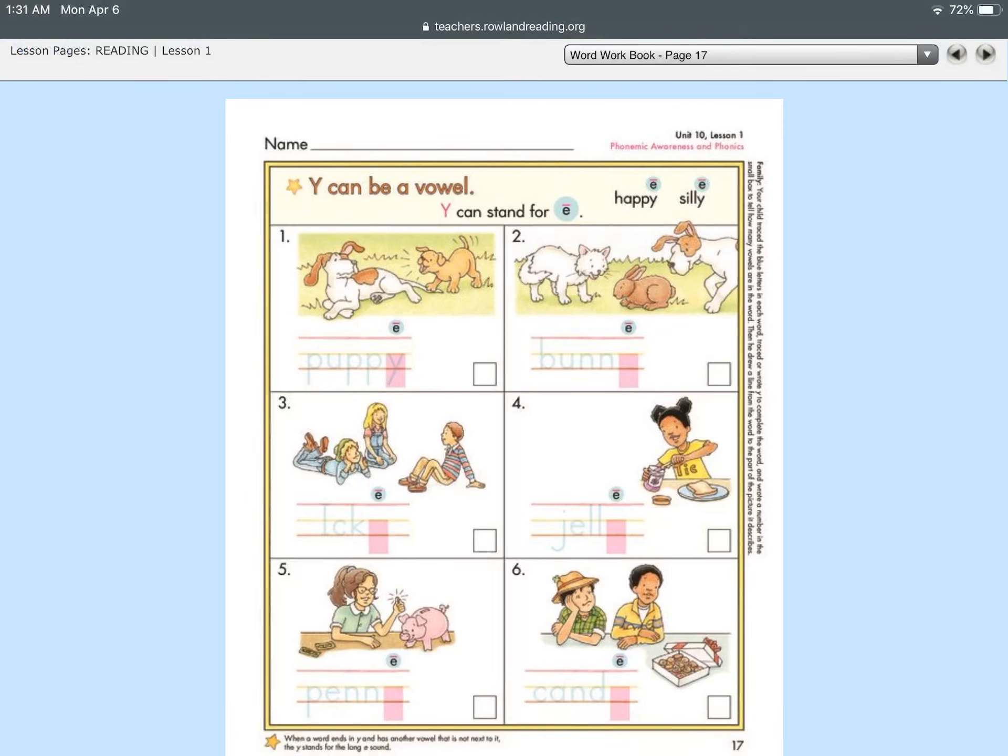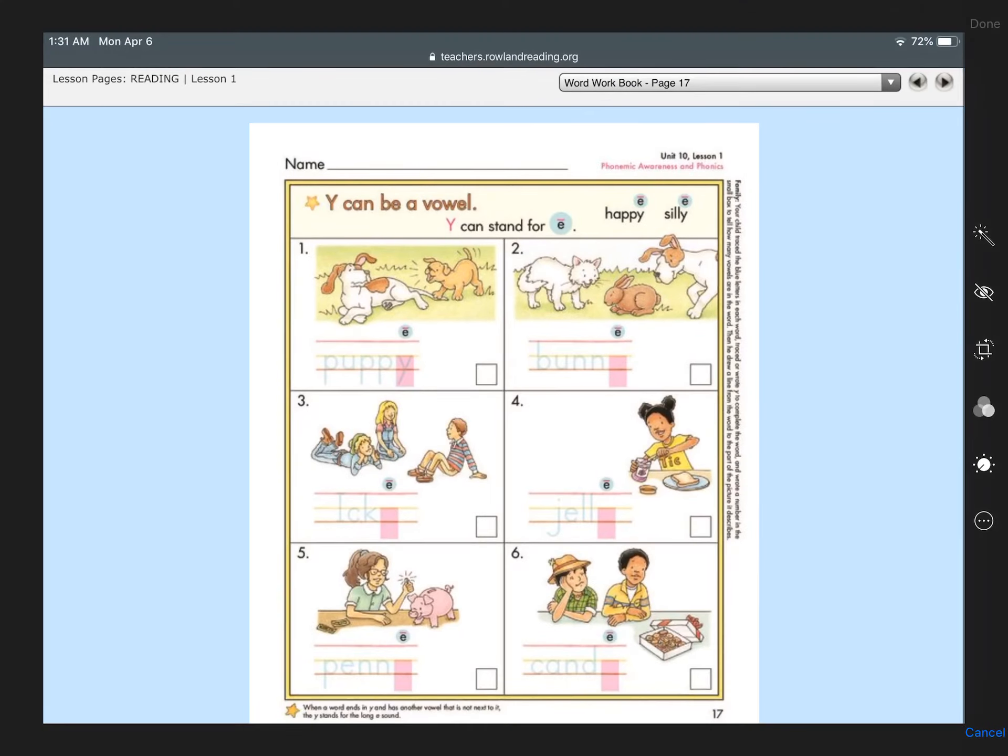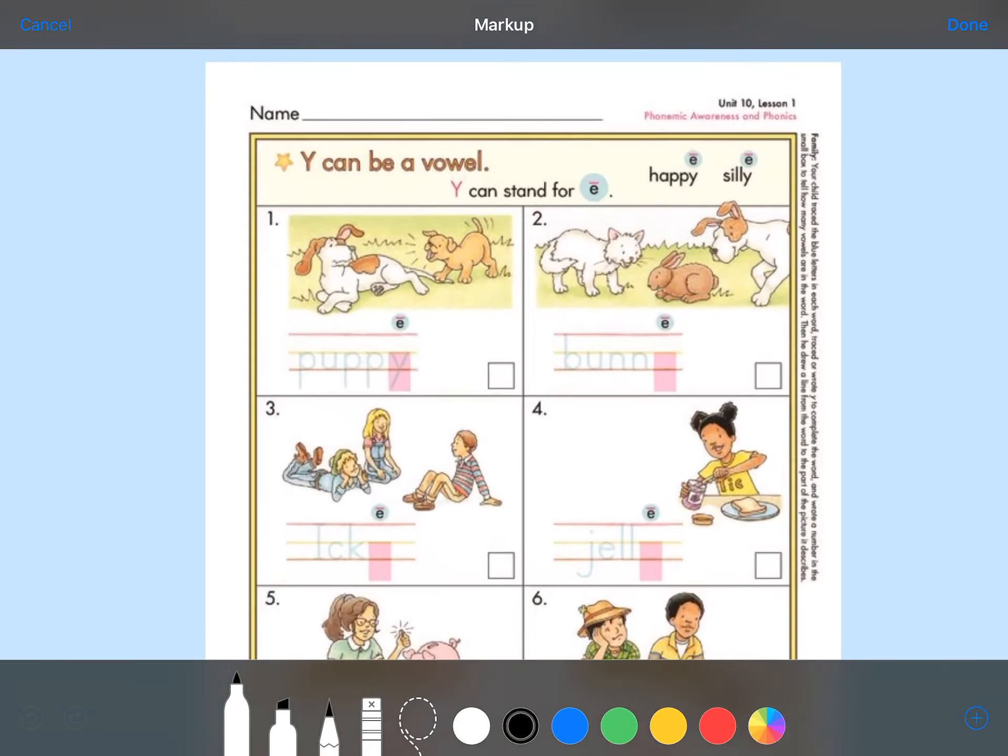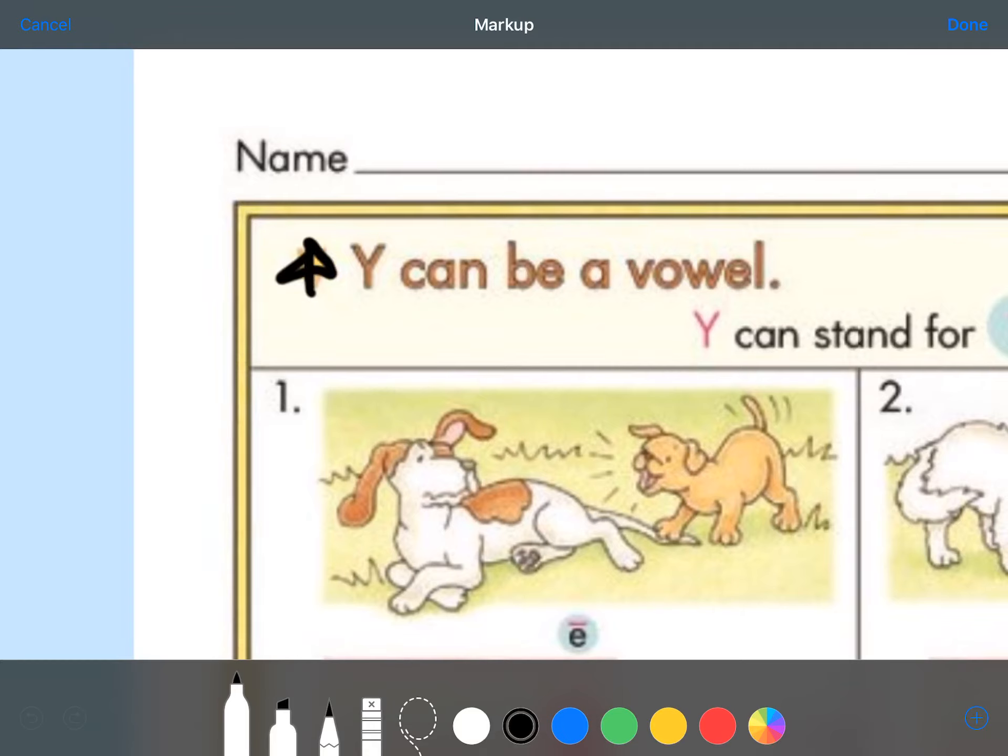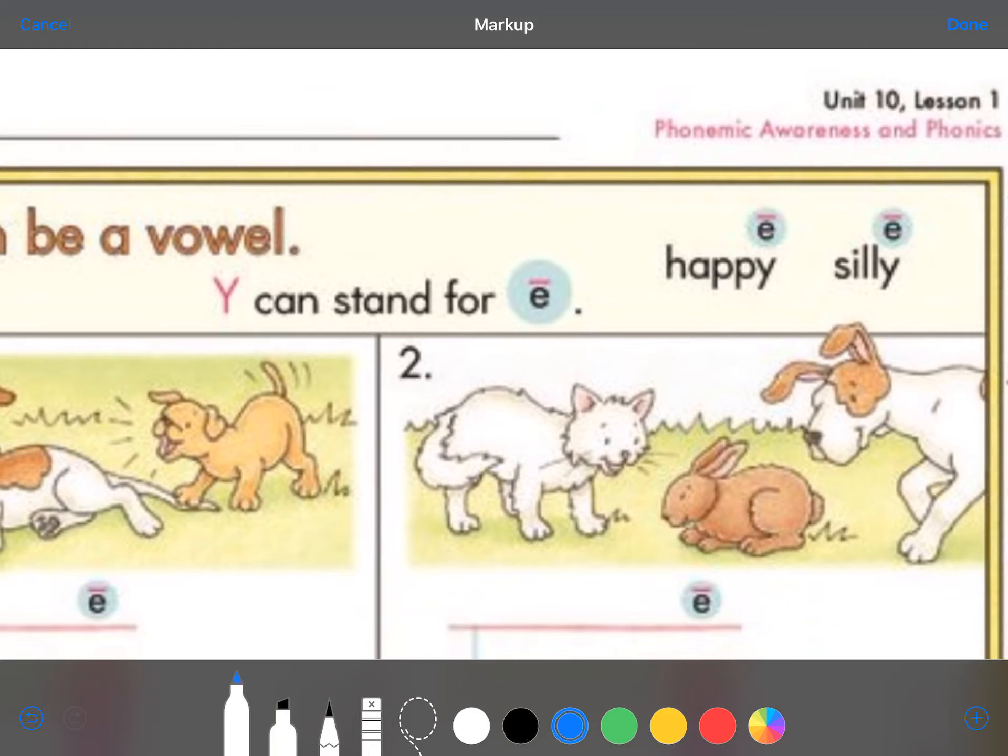Now, you should be turning the page to page 17. And we're going to learn about another way that Y can be a vowel. Let me scoop my papers over. So, we're going to do the same thing as before. Let's look at the top, right here by our star. Y can be a vowel. It's telling us that same information, but this time, we get to learn that Y can stand for E. Remember, I told you that long line at the top above the letter means it's going to say its name. E.